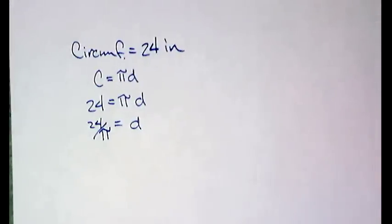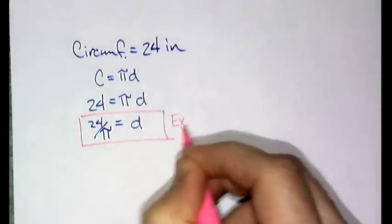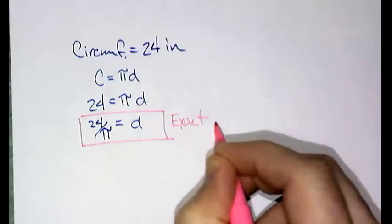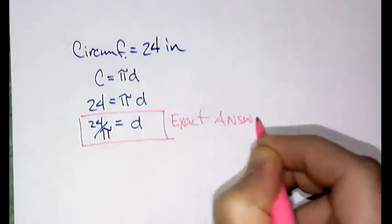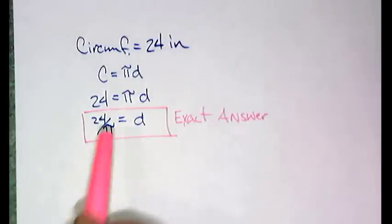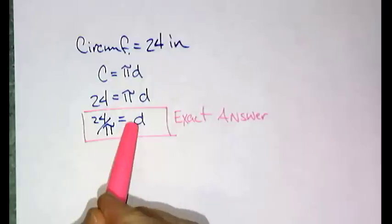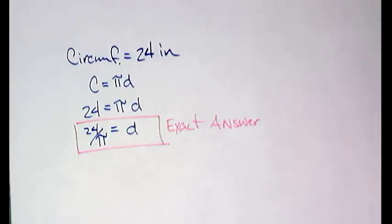And guess what? That is an acceptable answer. As a matter of fact, that is the exact answer. That is not rounded because if I try to put a value in for pi, which you know there is no value that's going to be exact enough, I am going to round. At this point, I am exact and that's as far as I can go. So that's the answer.